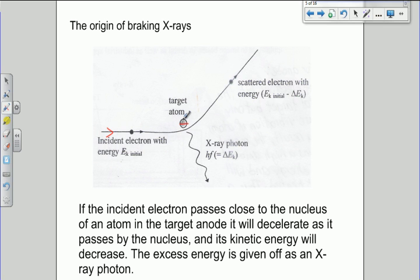Some of them will come across the nuclei of the target atoms. This is usually made of tungsten. This nucleus has a very large positive charge and the electron has a negative charge.